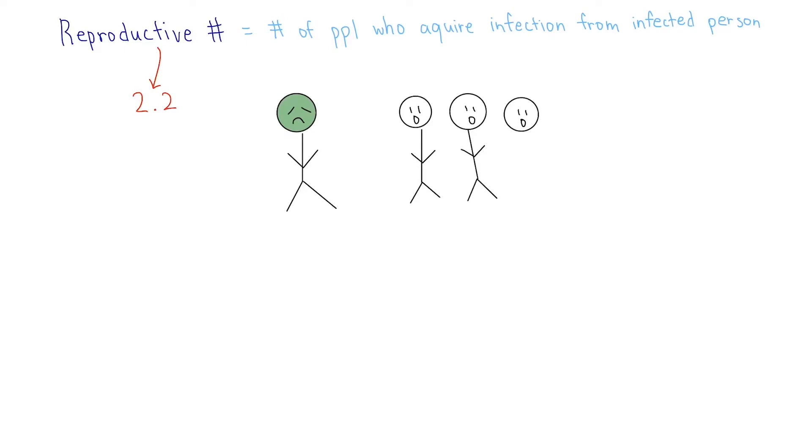Pathophysiology: The reproductive number is not as sexy as you might initially imagine. Rather, it is the number of people who acquire the infection from an infected person. For COVID-19, this number is 2.2, so each infected person infects 2.2 other people on average.